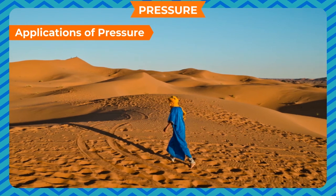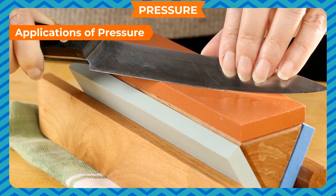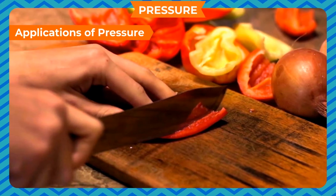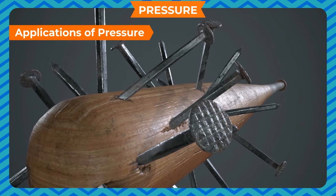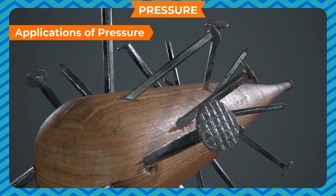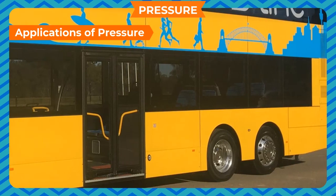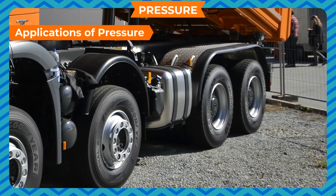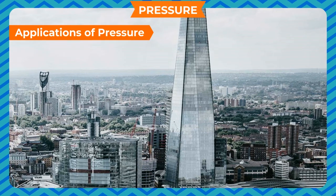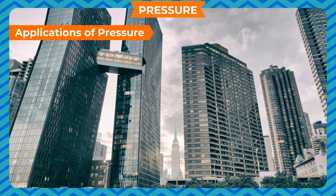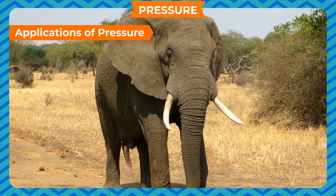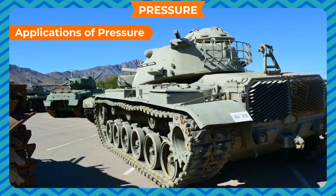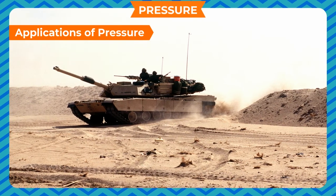Applications of Pressure: A knife has a sharp blade with less area, increasing pressure so things are cut easily. Nails and needles have pointed tips to decrease the area of contact so that for a given force the pressure exerted is more. Buses and trucks have double wheels at their rear to increase the area of contact so that pressure on the ground is less. High buildings have a broad foundation so their pressure is less, preventing them from sinking. Heavy animals like elephants have broad feet to decrease pressure while they walk. Army tanks have caterpillar wheels to increase area and exert less pressure on the ground.